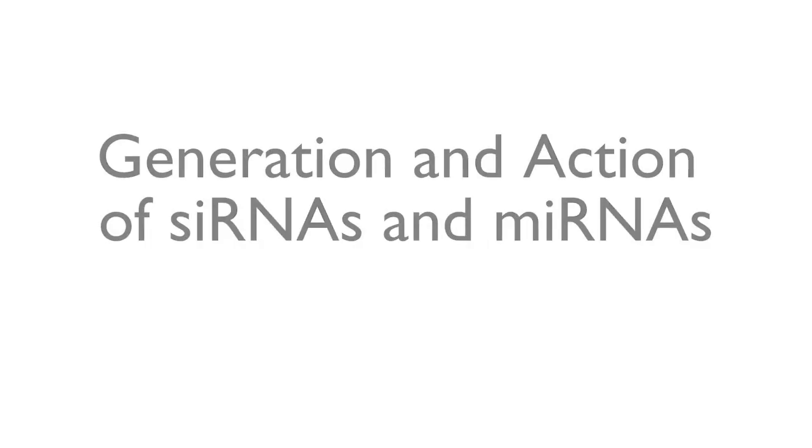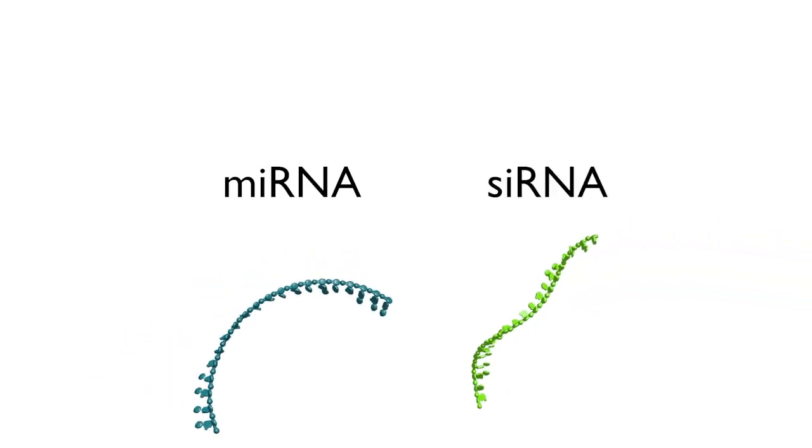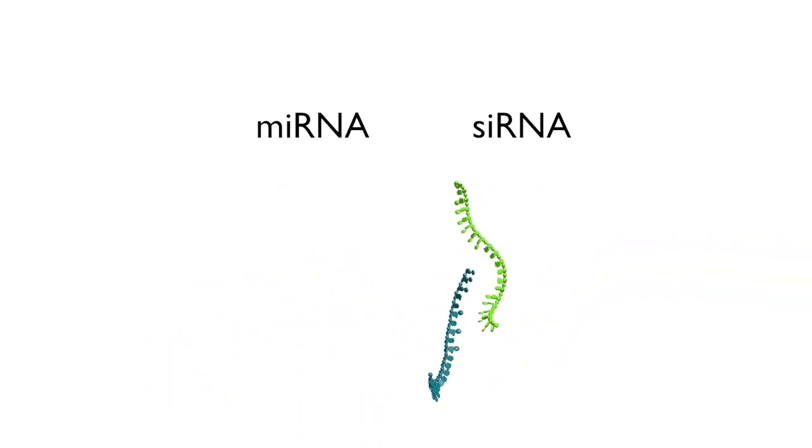Two families of small regulatory RNAs, called microRNAs and small interfering RNAs or siRNAs, regulate the stability and translation of mRNAs in eukaryotes.